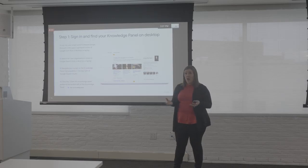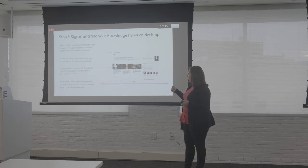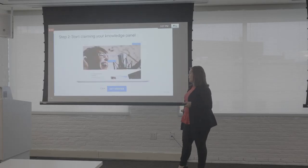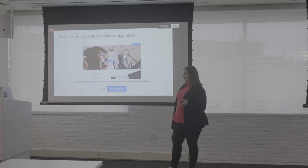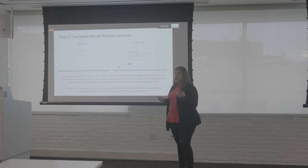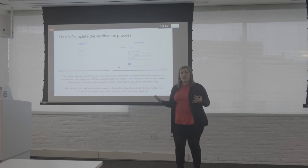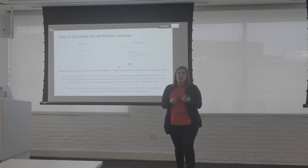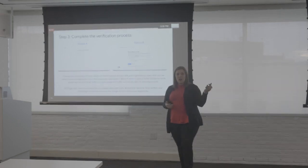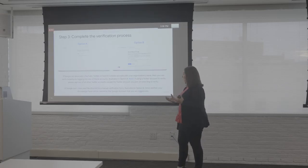To claim your knowledge panel: sign in and find it on desktop, Google your principal or organization, navigate to the knowledge panel, and click 'Claim this knowledge panel' at the bottom. You'll arrive at the Get Verified page — click Get Verified, then choose option A or B. If it presents third-party sign-ins, authenticate that you are a member of the organization. Ensure you're signed into the shared Google account for your organization — it's important to keep the knowledge panel within the organization rather than on a personal Gmail account.